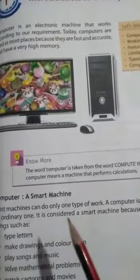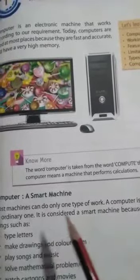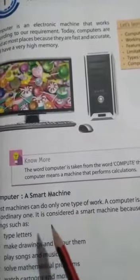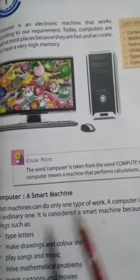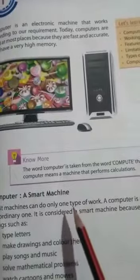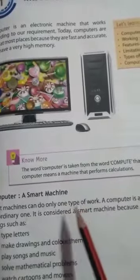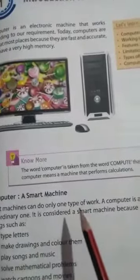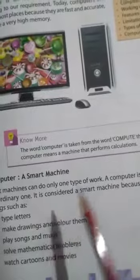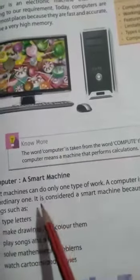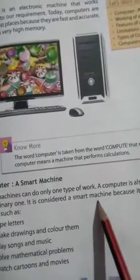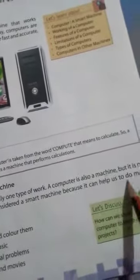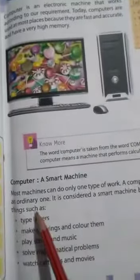Other machines can do only one type of work like a refrigerator, fan, so many things. They do only one type of work, but a computer is not an ordinary one. It is considered a smart machine because it can help us to do many things such as...